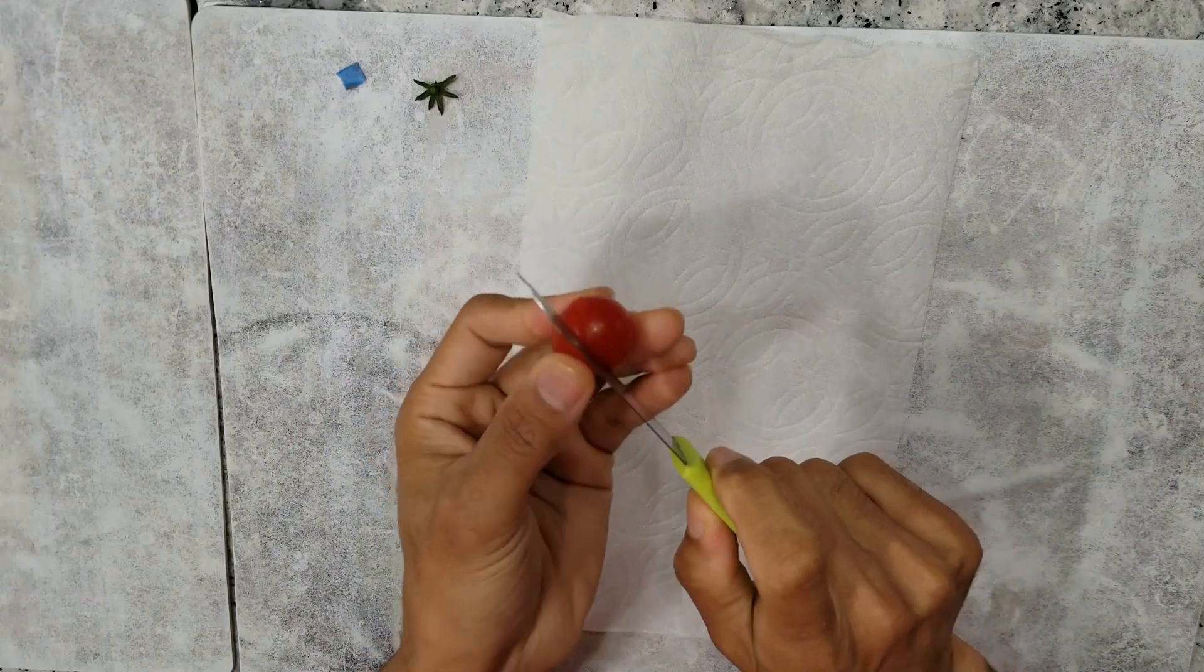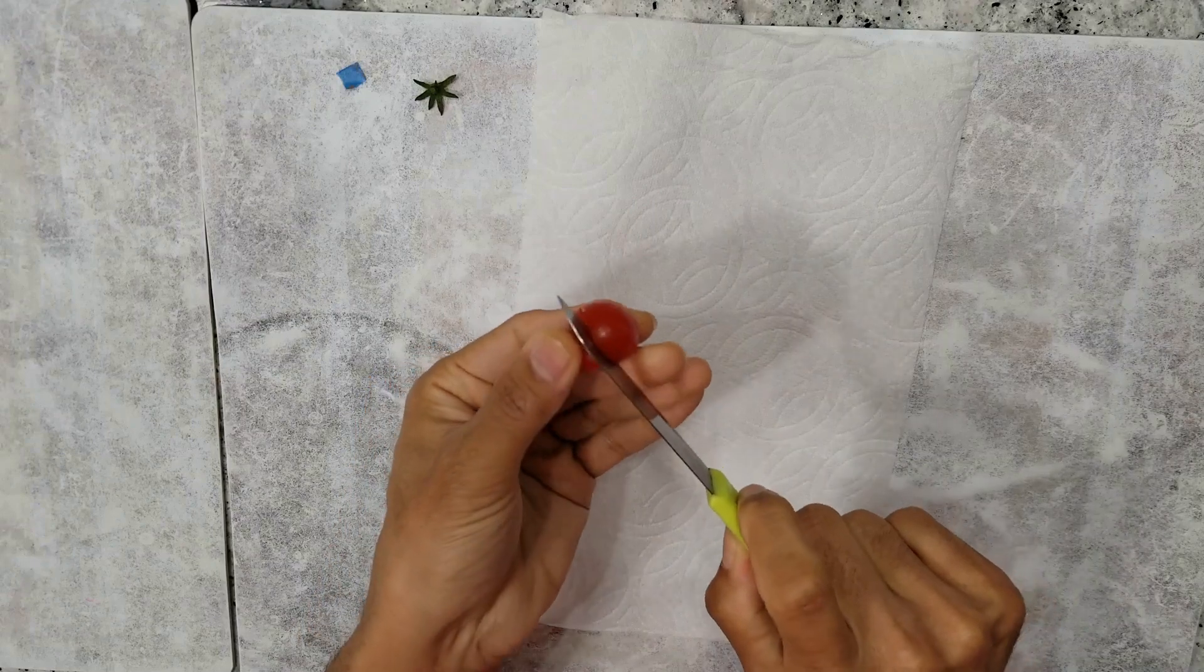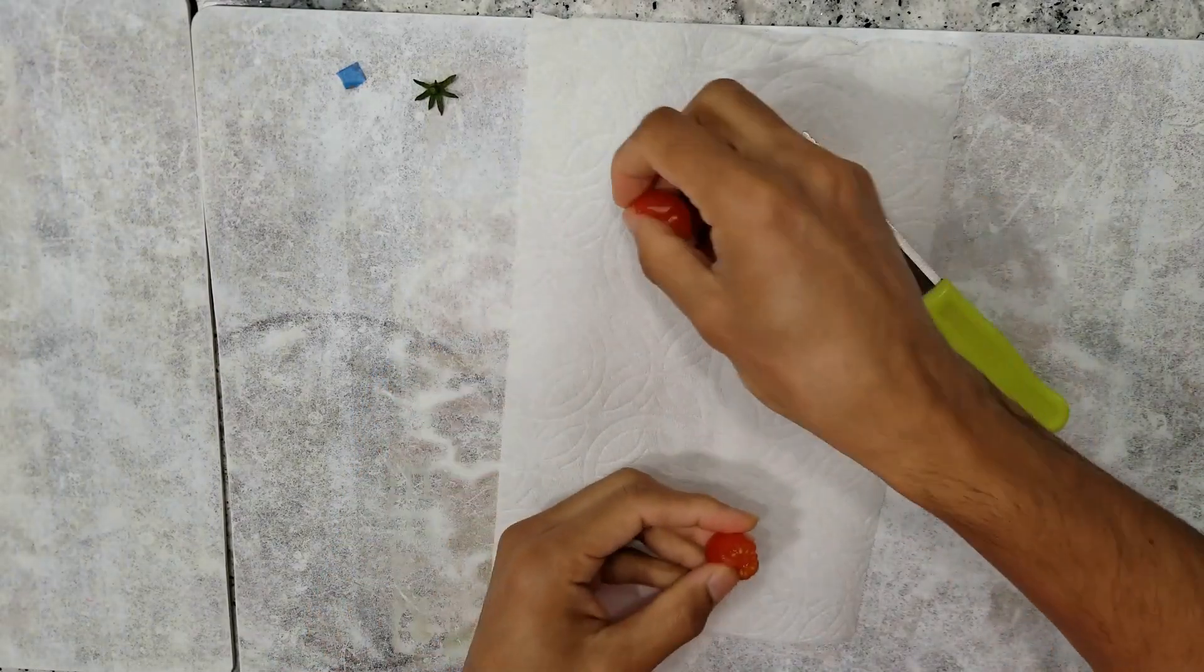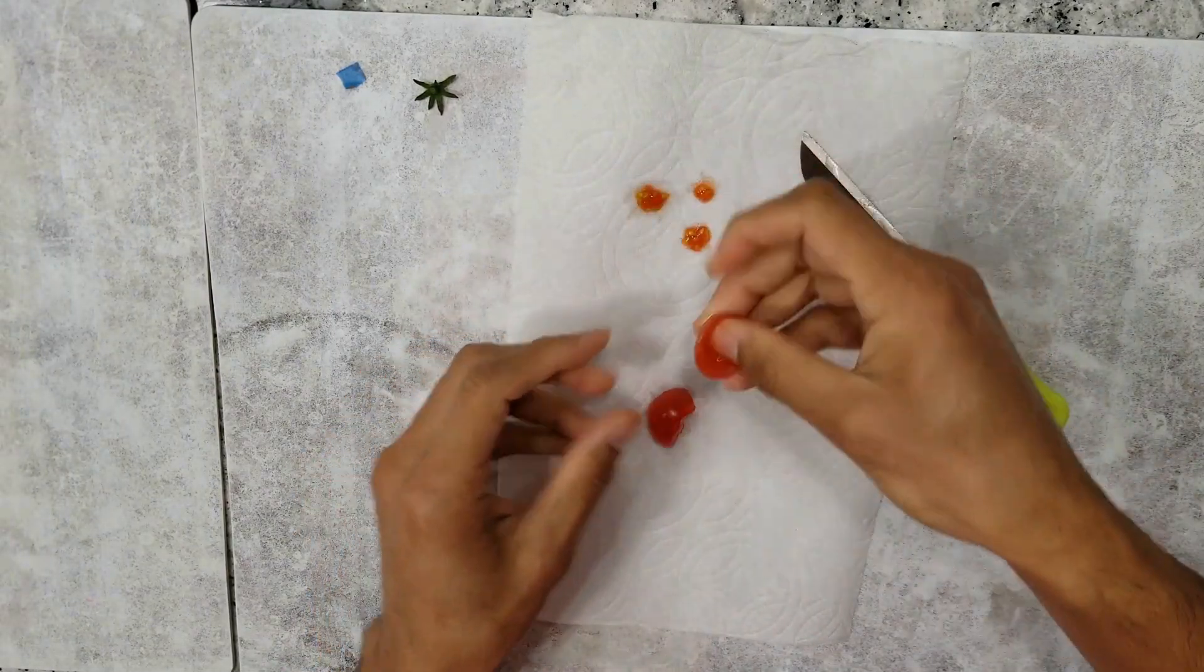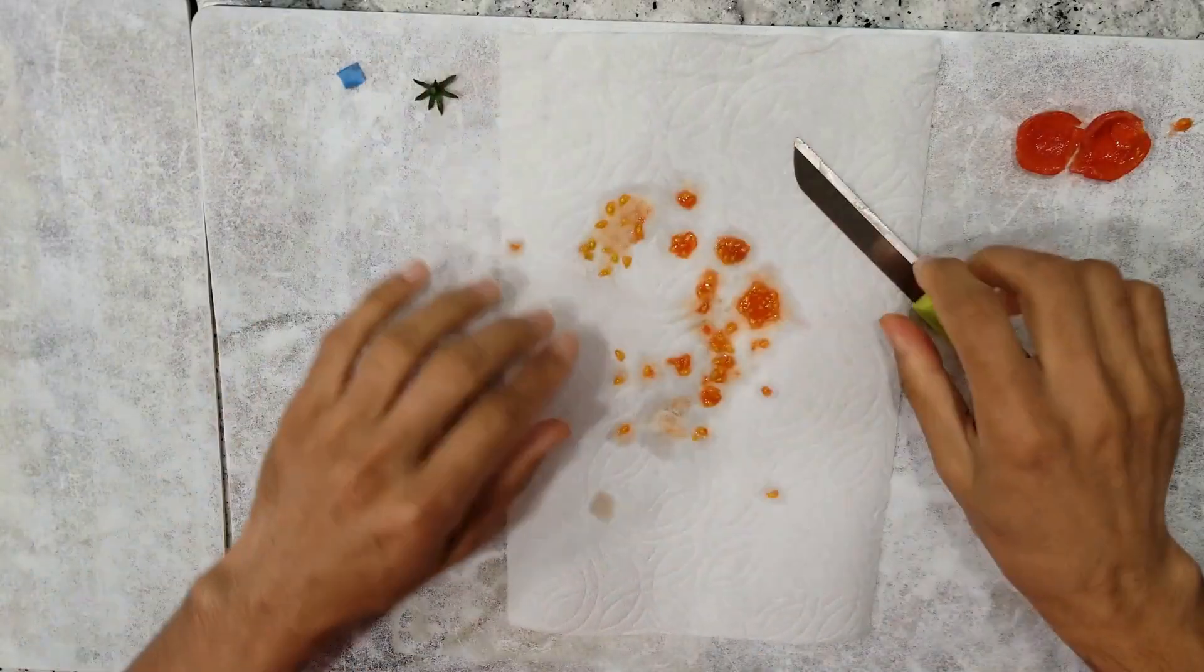Then cut and open the tomato and extract the seeds onto a paper towel. Then spread them and separate the seeds from each other.